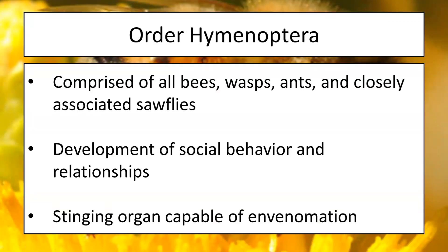So I'm going to throw some science words at you. Entomologists love to classify things, and we typically classify insects by traits they all share within a given group. In this case, bees and their relatives belong to an order of insects known as Hymenoptera, which means membranous wing. This group contains all bees, wasps, ants, and is connected to sawflies.